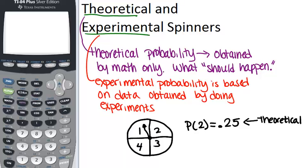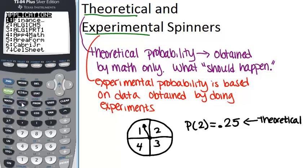On your calculator, there is a simulator that will actually simulate spinning a spinner, among other things. How you get to it is go into the apps section, so click apps, and then look for the item that says prob sim, just like this.